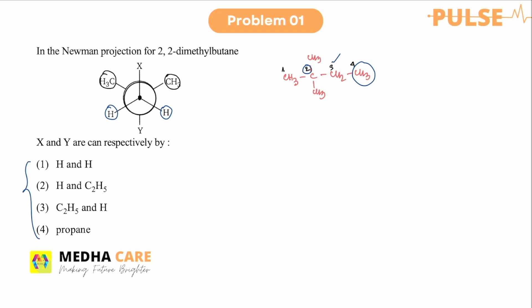So carbon one is the front carbon. Carbon one contains three hydrogens, so X will be a hydrogen atom. Now for Y: carbon two already contains two methyl groups and another group, which is an ethyl group. So Y will be the ethyl group. The correct answer in this case will be option two.